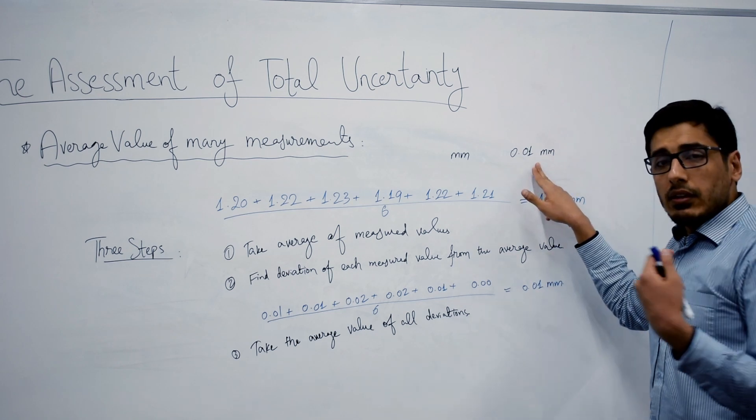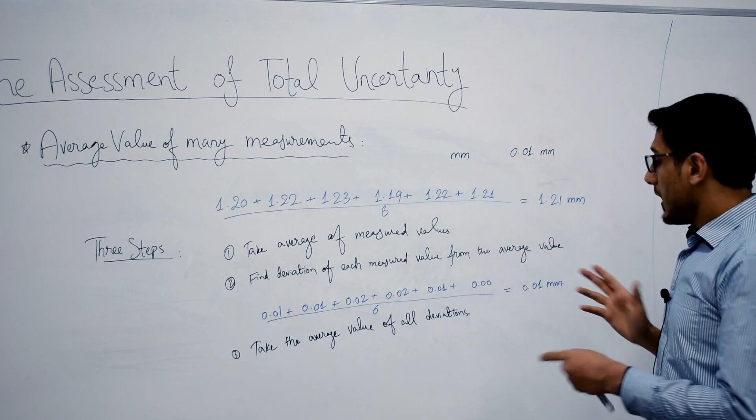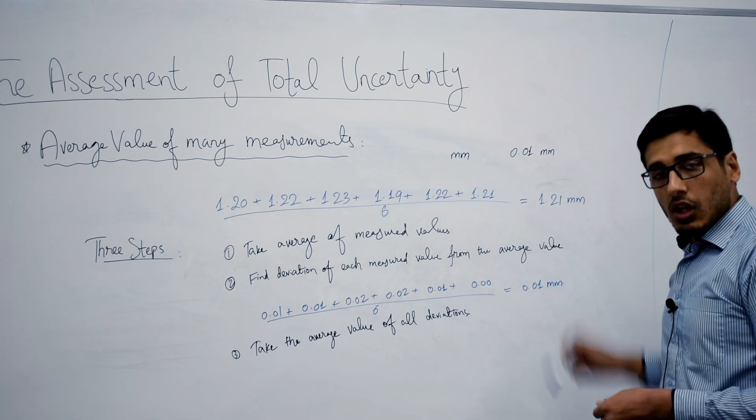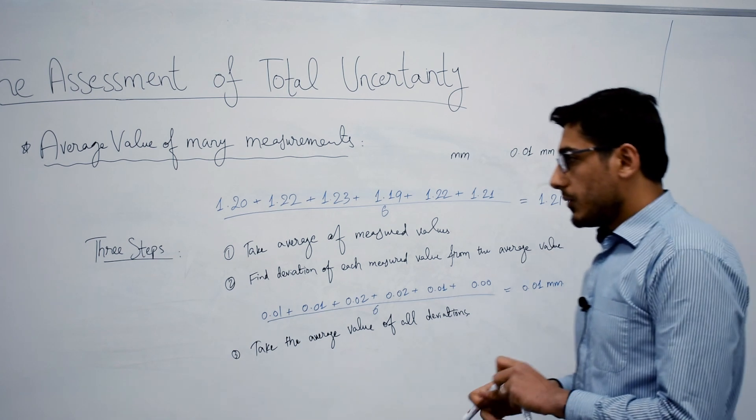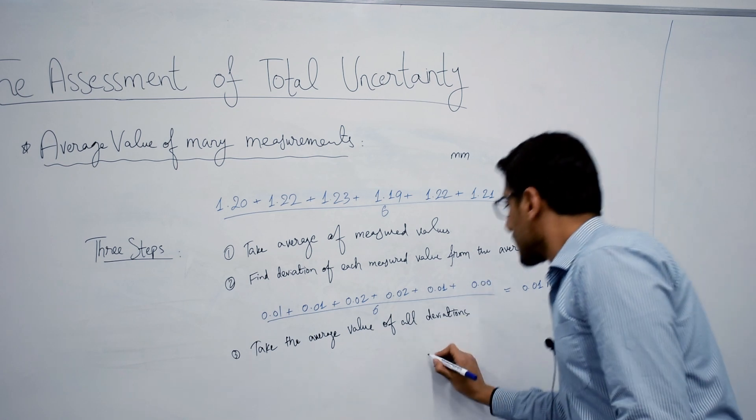In this specific case, the final uncertainty that we have in our final result is actually equal to the least count or the absolute uncertainty of the device, which was screw gauge. But it might not be the case in different readings, so that's why we go through this process. So writing the final result: this is the measurement...